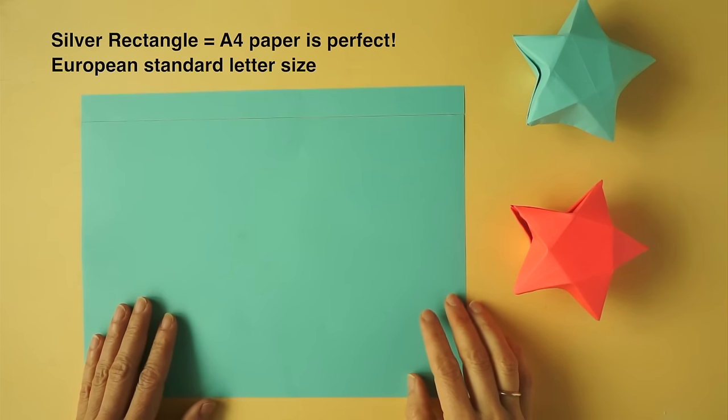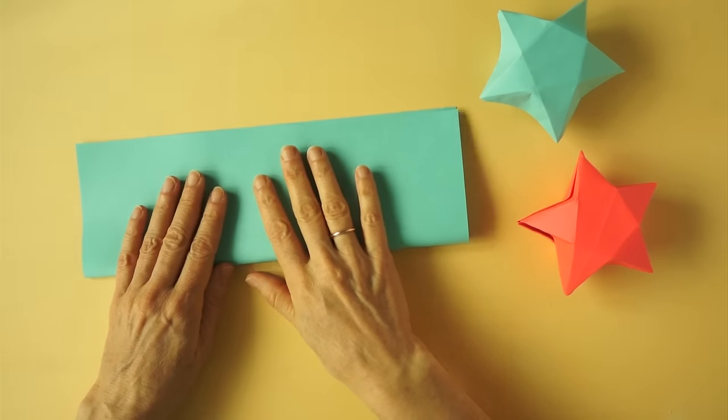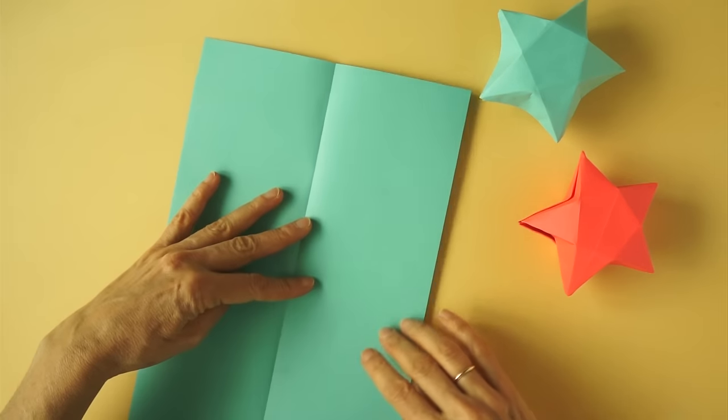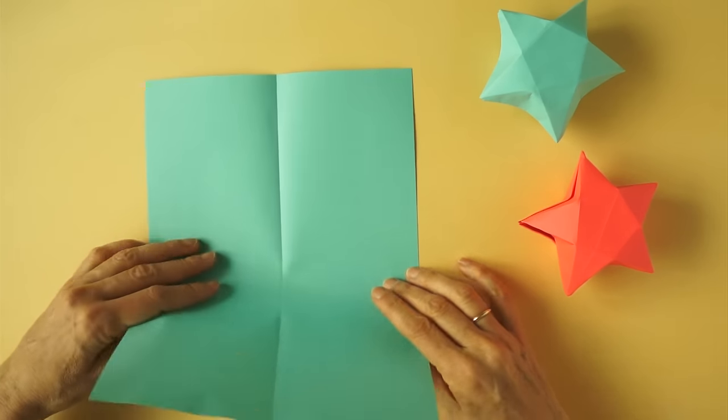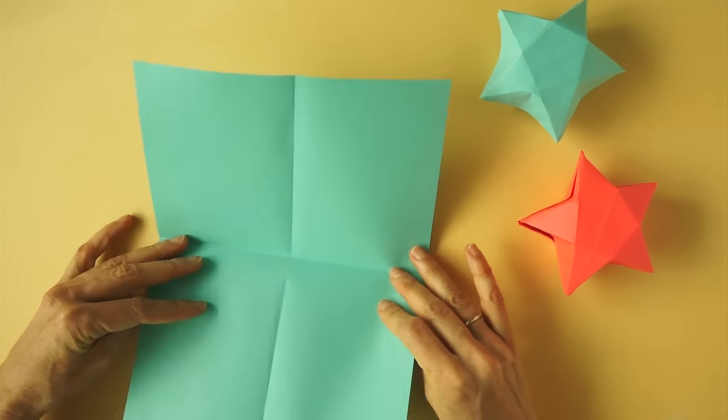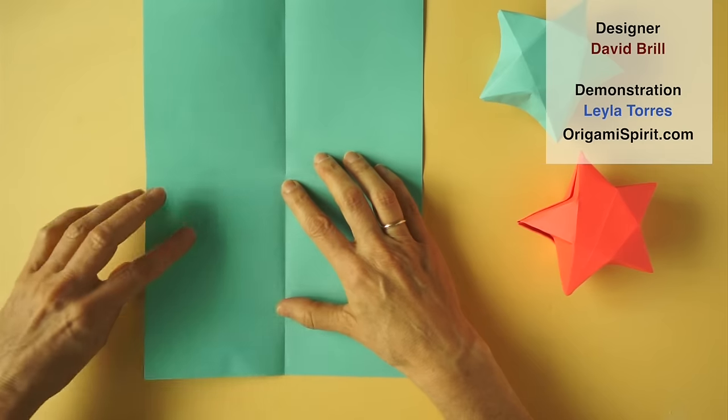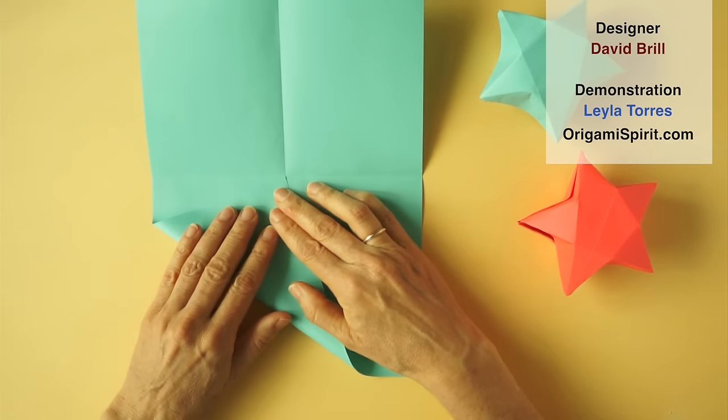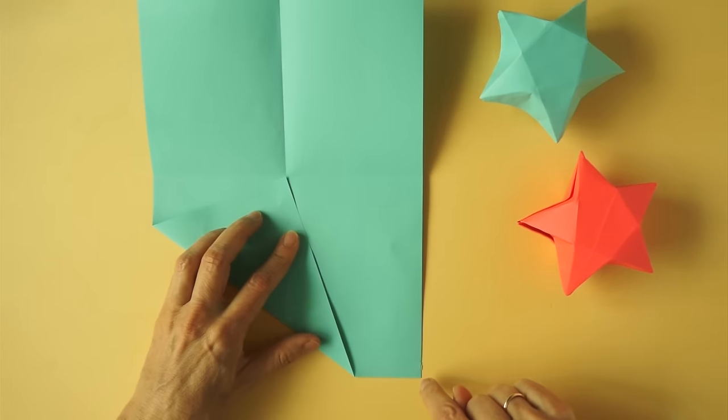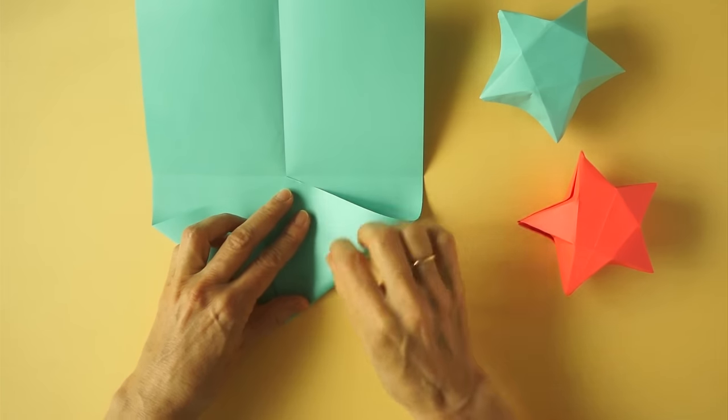Fold in half. Rotate. Fold in half. Bring the lower left corner up to the center. Crease. Bring the lower right corner up to the center, as precise as we can.